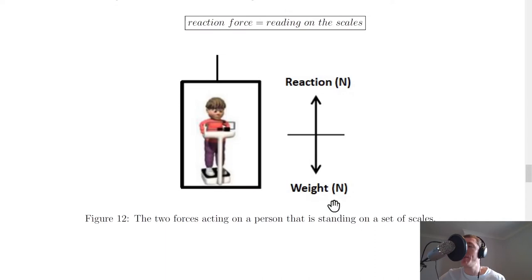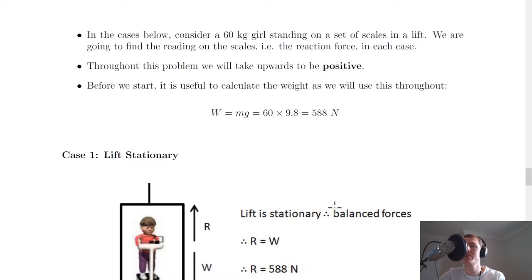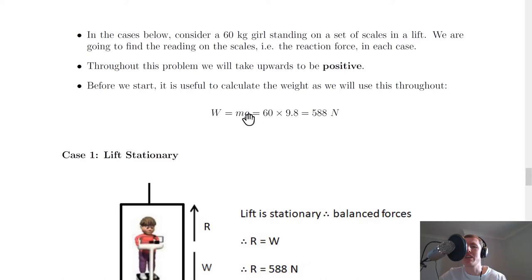Before looking at seven different cases for motion in a lift, consider a 60 kg girl standing on scales in a lift — we want to find the reaction force R in each case. We'll take upwards as positive. First, let's calculate her weight: W = mg = 60 × 9.8 = 588 newtons. We'll use this value of 588 N throughout all seven cases.